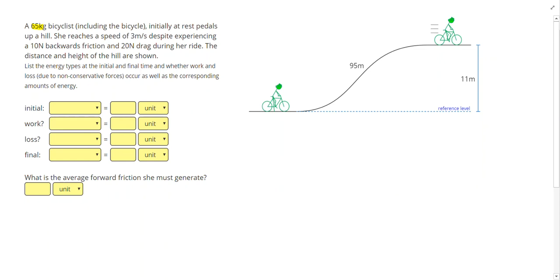A 65-kilogram bicyclist, including the bicycle, initially at rest pedals up a hill. She reaches a speed of 3 meters per second despite experiencing a 10-newton backwards friction and a 20-newton drag during her ride. The distance and the height of the hill are shown. The distance of the hill is 95 meters and the height of the hill is 11 meters.